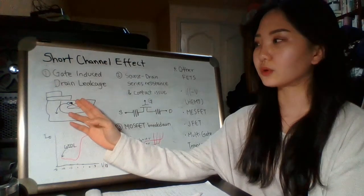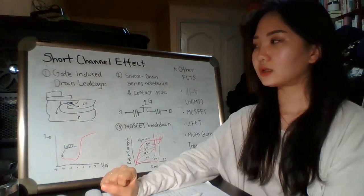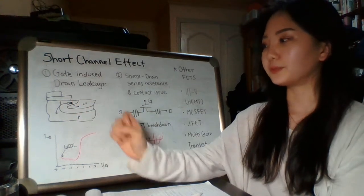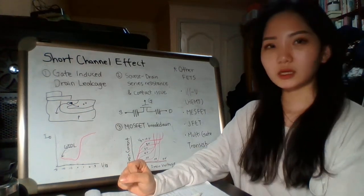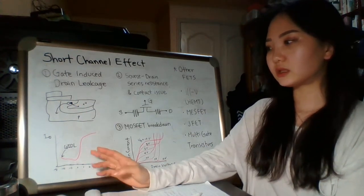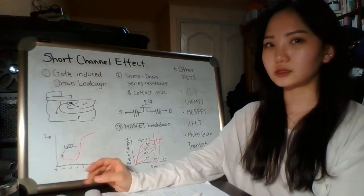the generated hole goes to body, and electron goes to drain. It makes leakage currents even in the situation of gate-off.